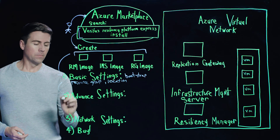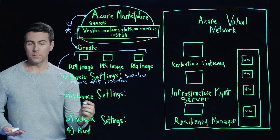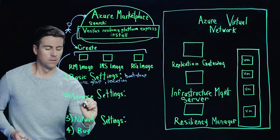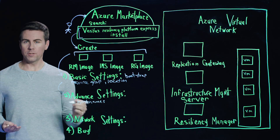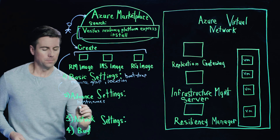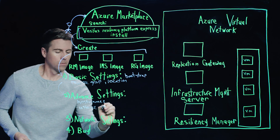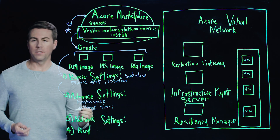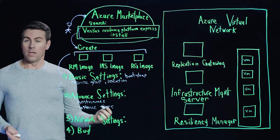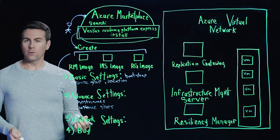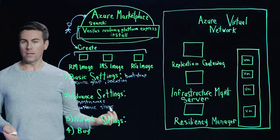From there, we enter a couple more advanced settings — this would be host names for our appliances, and it would also include the instance sizes for our Resiliency Platform appliances. For the most part, the standard or default option will be good enough, but you do have the ability to customize that as required.